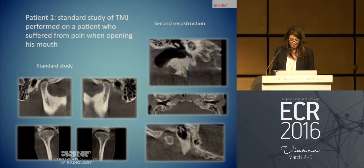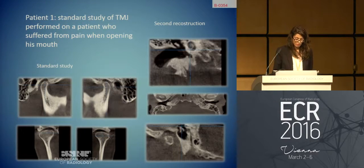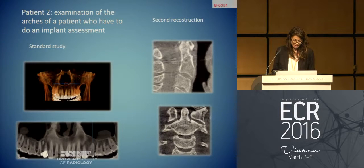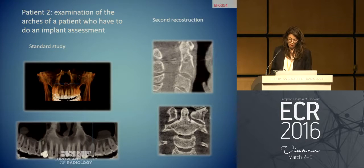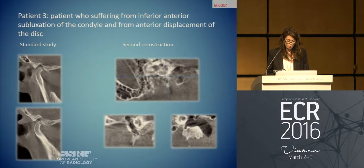For example, this is the result of a standard study of the temporomandibular joints performed on a patient who suffered from pain when opening his mouth. After sagittal and coronal reconstructions of the temporomandibular joints, we tried to reconstruct the temporal bone using the same data. These images, instead, are taken from the examination of the arches of a patient who underwent cone-beam CT for an implant assessment. Following the standard reconstructions, we reconstructed the cervical spine. These are temporomandibular joints reconstructions in a patient suffering from inferior anterior subluxation of the condyle and anterior displacement of the disc, on which we then reconstructed the temporal bone structures.